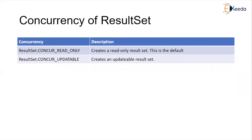Another type is concurrency. There is concur read only, which creates a read-only result set and is the default, and concur updatable, which creates an updatable result set that can be modified.